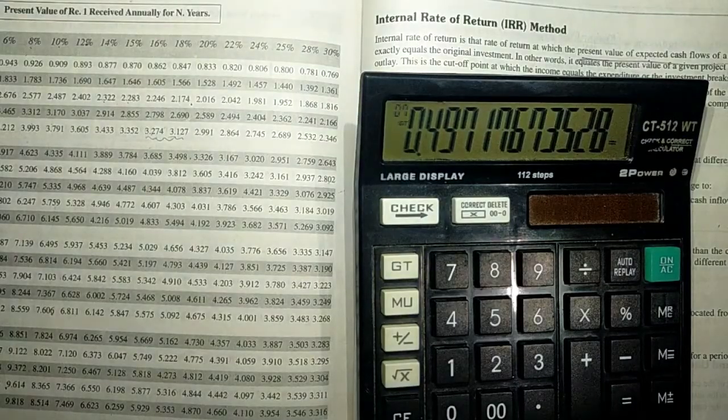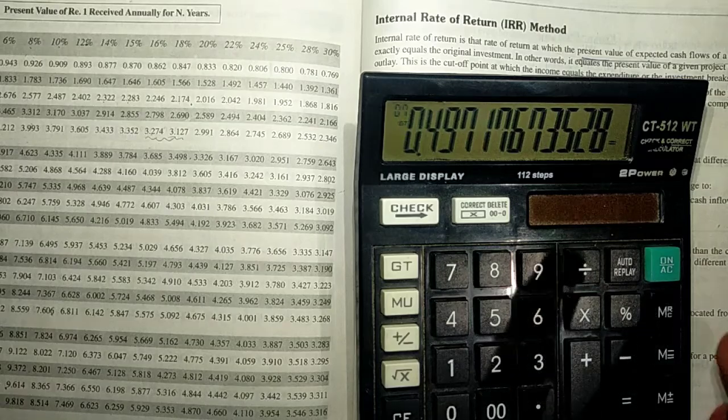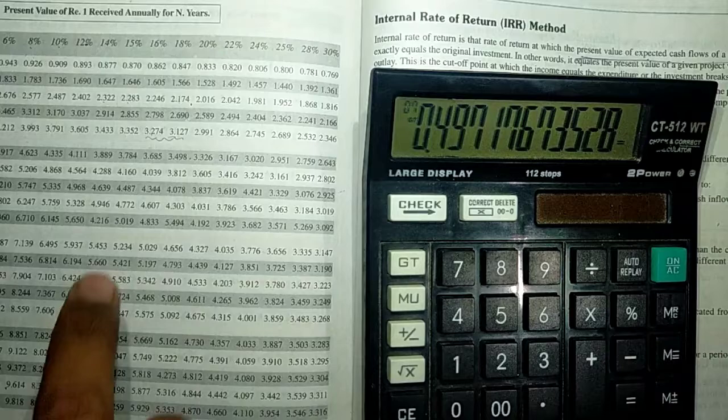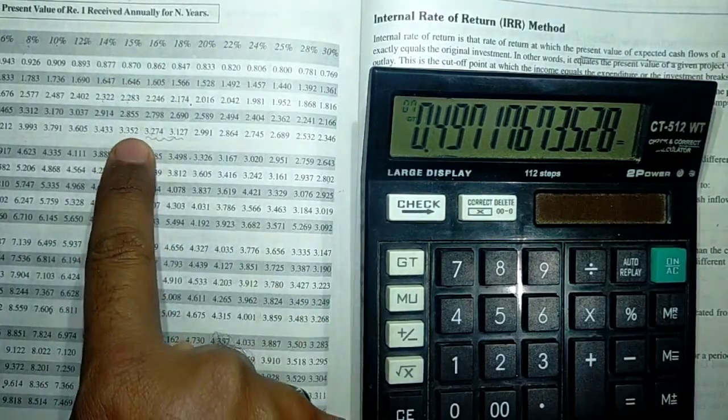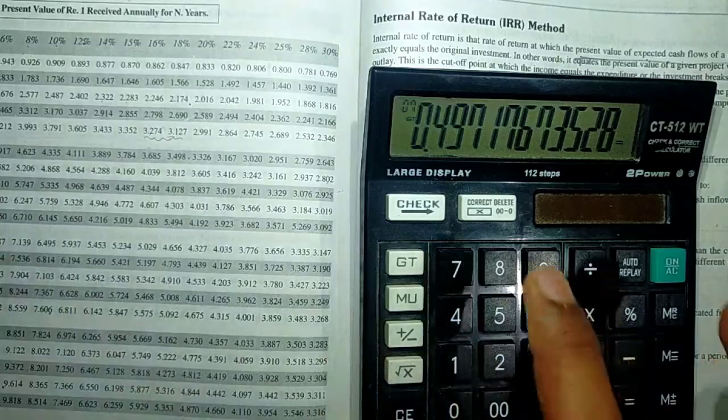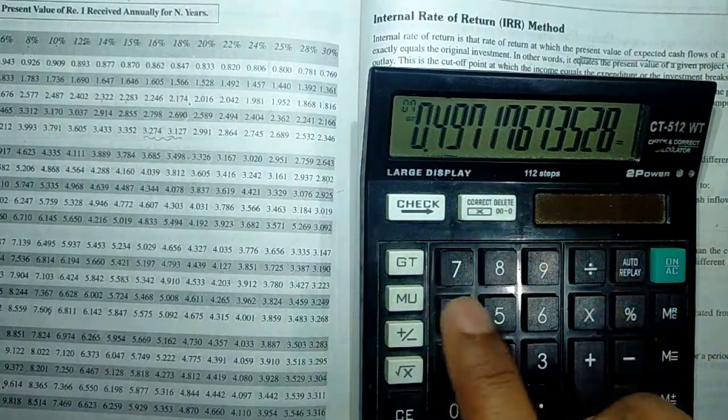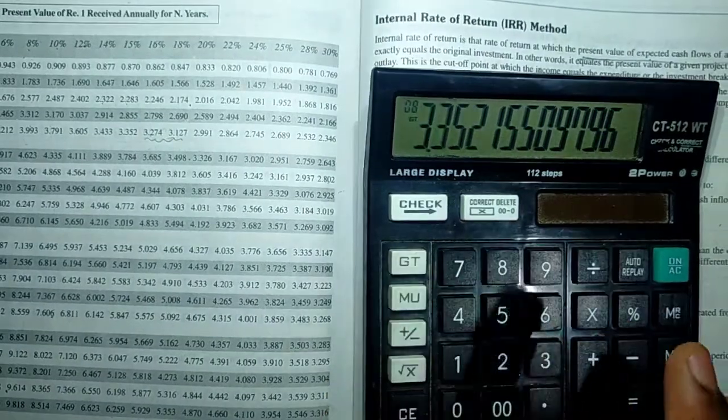Now if you want to know the PVIFA of the same 15% for the fifth year, what you need to do after getting PVIF is simply press the Grand Total button.